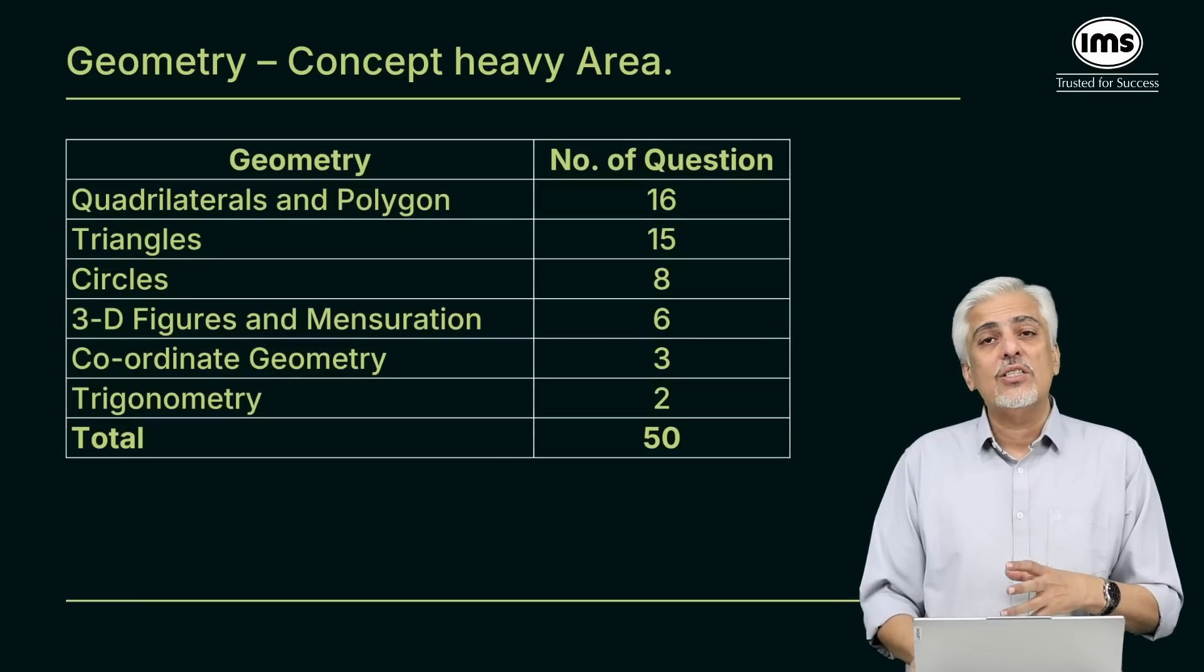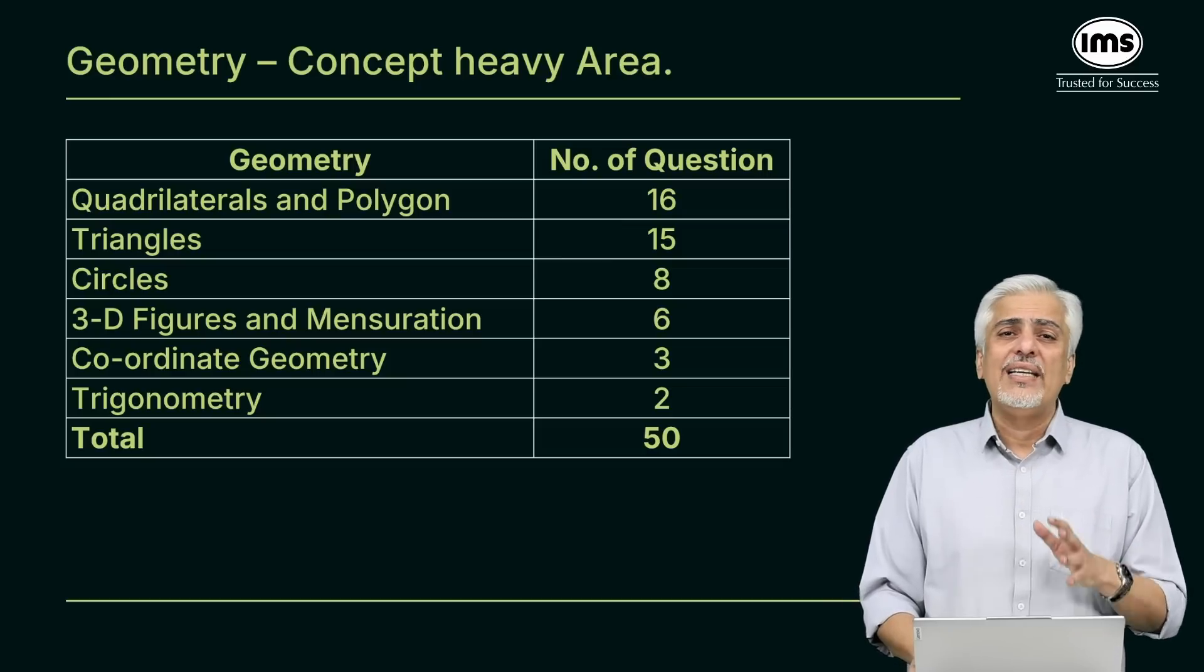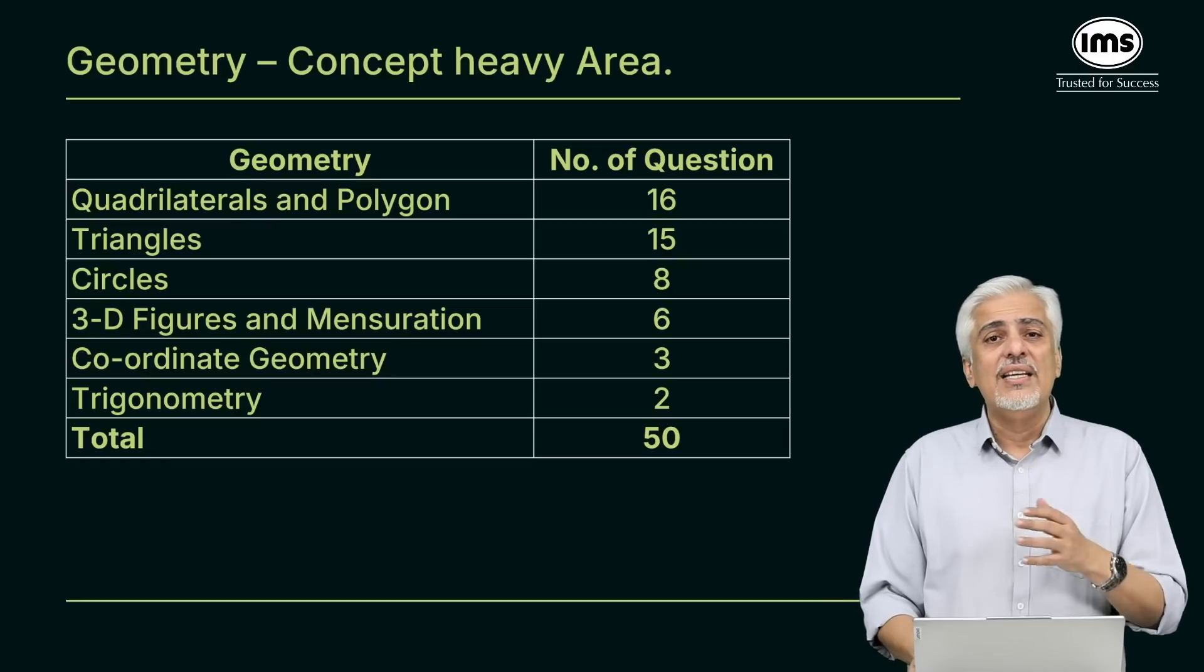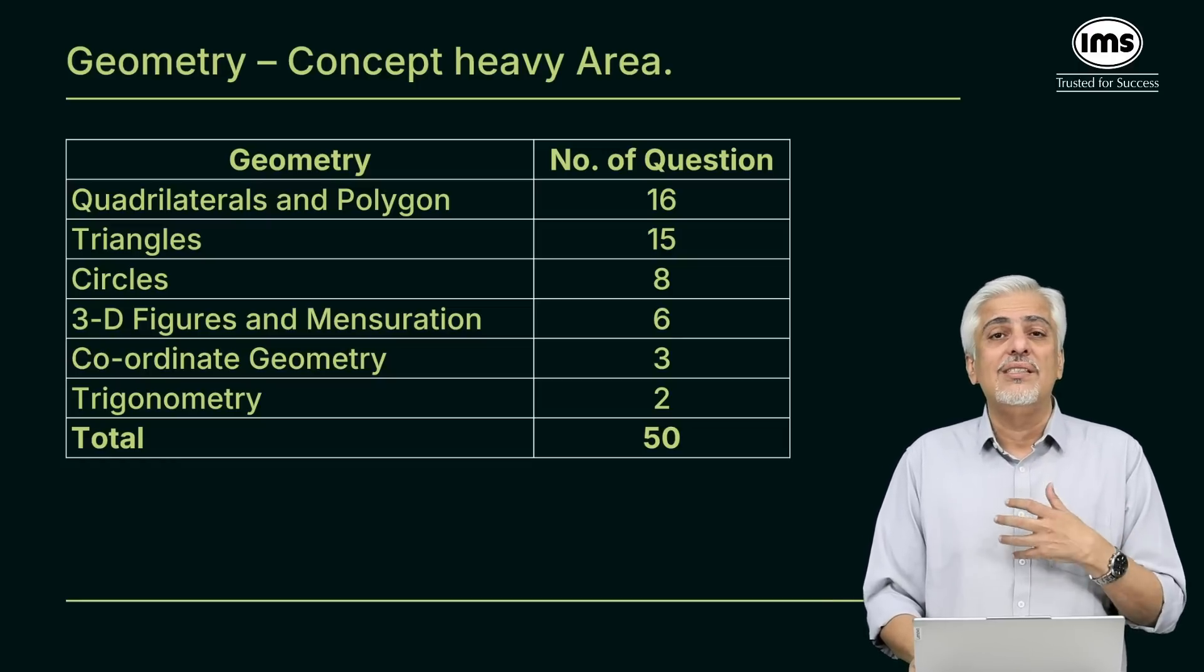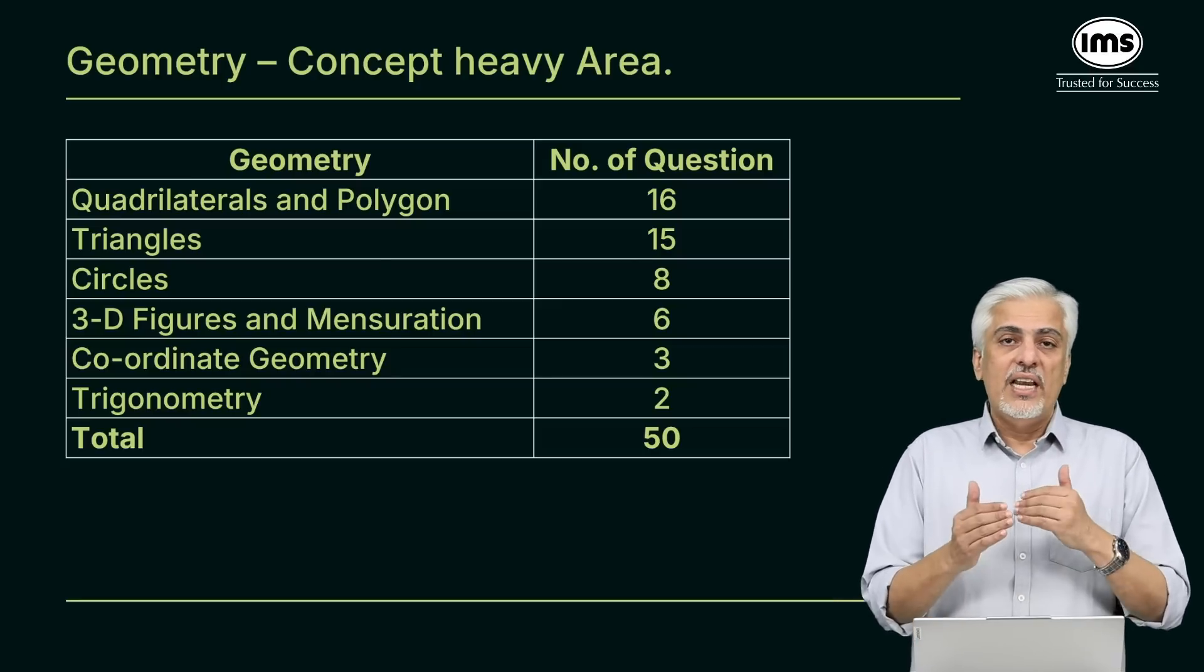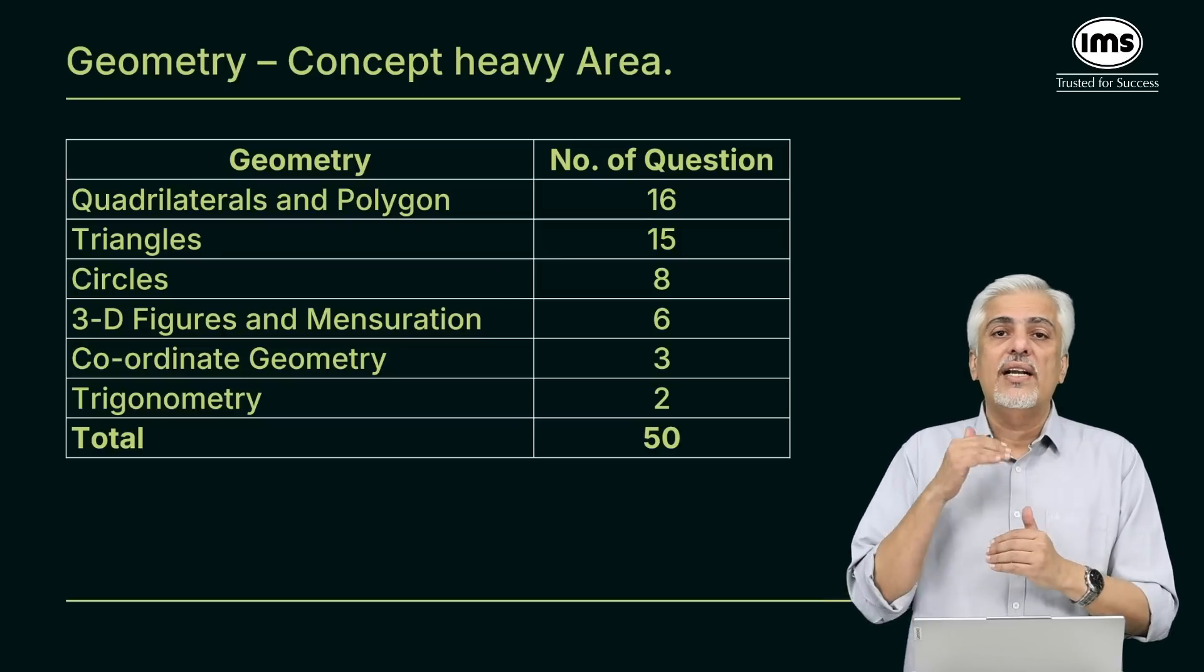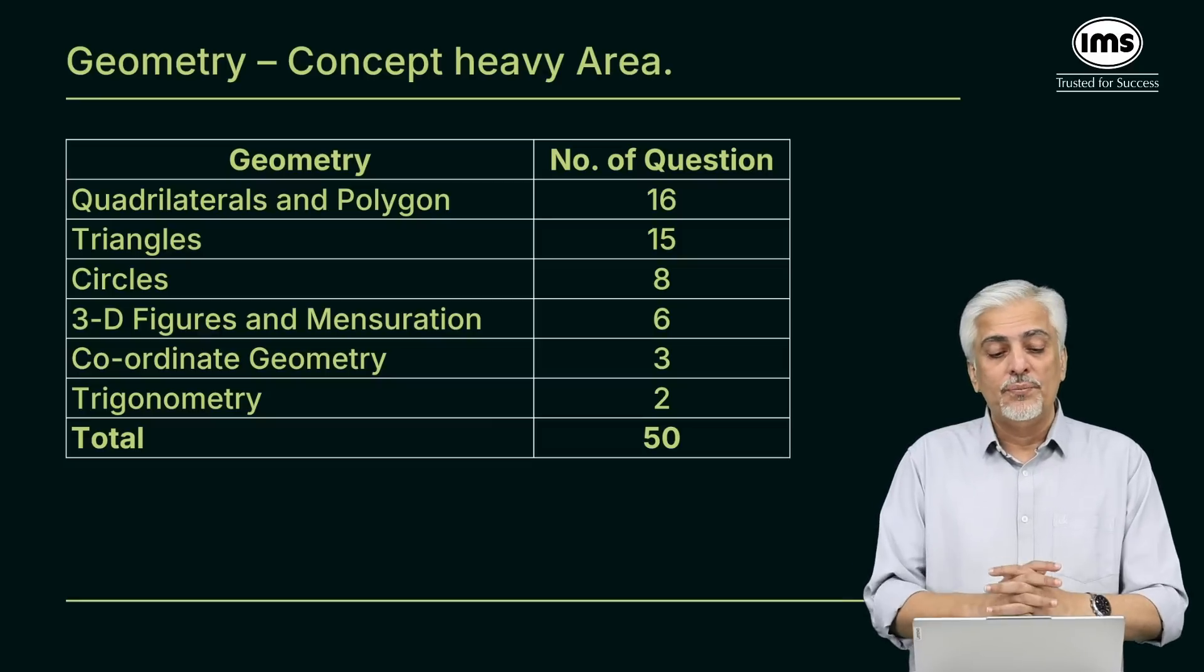Next, geometry. It's always a concept heavy area. I need to know geometry, I need to know concepts. I need to know what Apollonius theorem is, how Pythagoras theorem is, I need to understand similarity. I need to understand these concepts. If you don't know the concepts, in circles itself there are so many concepts. If you know the concepts well, you will be able to do questions. Important area for me is quadrilaterals, polygons and triangles. In fact it goes like this. First you revise triangles, from triangles you reach quadrilaterals, from quadrilaterals you reach polygons. And that is 31 questions nearly more than 60% of your geometry.